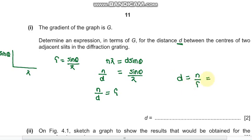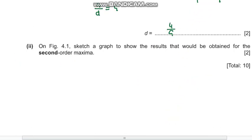We have a fourth order, so it could be 4 over g. So d equals 4 over g.